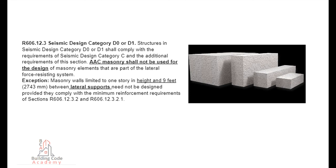R-606.12.3, Seismic Design Category D0 or D1. Structures in Seismic Design Category D0 or D1 shall comply with the requirements of Seismic Design Category C and the additional requirements of this section. AAC masonry shall not be used for the design of masonry elements that are part of the lateral force-resisting system. Exception: Masonry walls limited to one story in height and 9 feet (2,743mm) between lateral supports need not be designed, provided they comply with the minimum reinforcement requirements of sections R-606.12.3.2 and R-606.12.3.2.1.